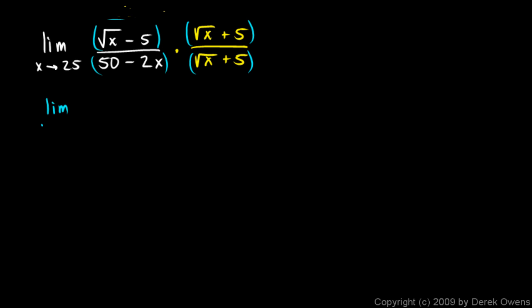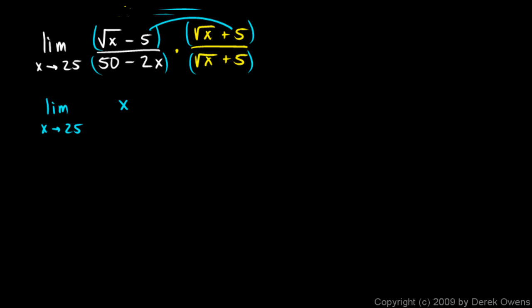So this gives us the limit as x approaches 25. Up top we have the square root of x times the square root of x, which is x. Then we have 5 times the square root of x and negative 5 times the square root of x — those will cancel out. And then we have negative 5 times 5, which is negative 25. So the numerator simplifies to x minus 25. Then the denominator I'm going to leave in factored form: 50 minus 2x times the square root of x plus 5.